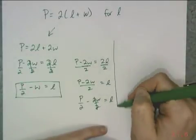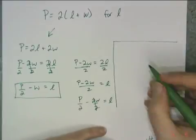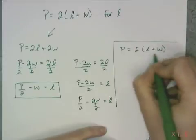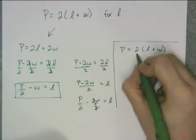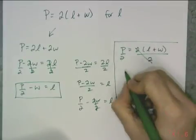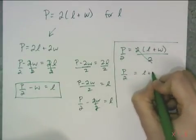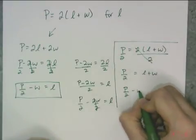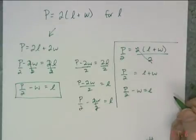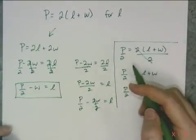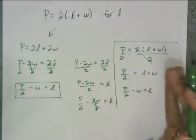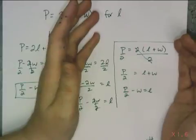If you remember the distributive property, you don't have to distribute at all here, because I'm solving for something inside the parentheses. My first step can actually be to divide both sides by 2, giving P over 2 equals l plus w. Then I just subtract w from both sides to get P over 2 minus w equals l. Either way, be careful when you distribute, and if you do, divide piecewise — or just avoid distributing altogether.